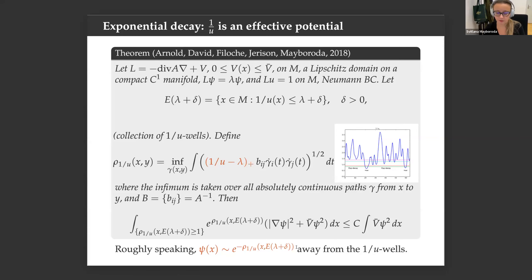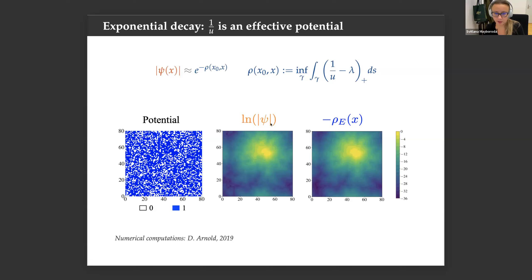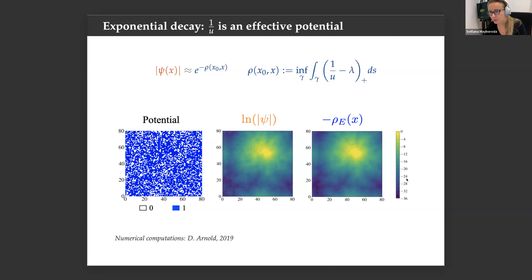How precise is this? Here is an example: a potential made of ones and zeros, and an eigenfunction shown on a logarithmic scale — every change in color is an exponential drop. On the right, the answer given by the landscape. It's pretty close — not identical, but going all the way to e^{-36}. The pattern is actually very close, better than what the theorem alone might predict.